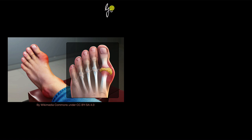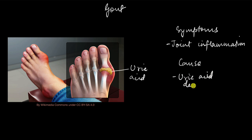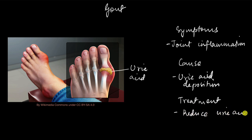Another joint disease is gout — this is actually another type of arthritis. You can see this foot joint is swollen and inflamed. The reason is very specific: in gout, uric acid crystals deposit in the joints, as you can see with these yellow crystals. Symptoms are joint inflammation, and the cause is uric acid deposition in the joints. Treatment involves medications which reduce uric acid levels in the blood, as well as anti-inflammatory drugs such as steroids.